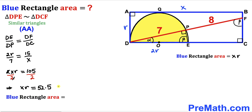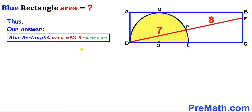Since the blue rectangle area equals x times r, and x times r equals 52.5, we conclude that the area of blue rectangle ABCD is 52.5 square units. That's our final answer. Thanks for watching, and please don't forget to subscribe to my channel for more exciting videos. Bye!